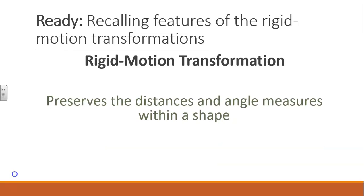Remember that rigid motion transformations preserve the distance and angle measures within a shape. Figures that undergo a rigid motion transformation have a different position, but the same shape and size.